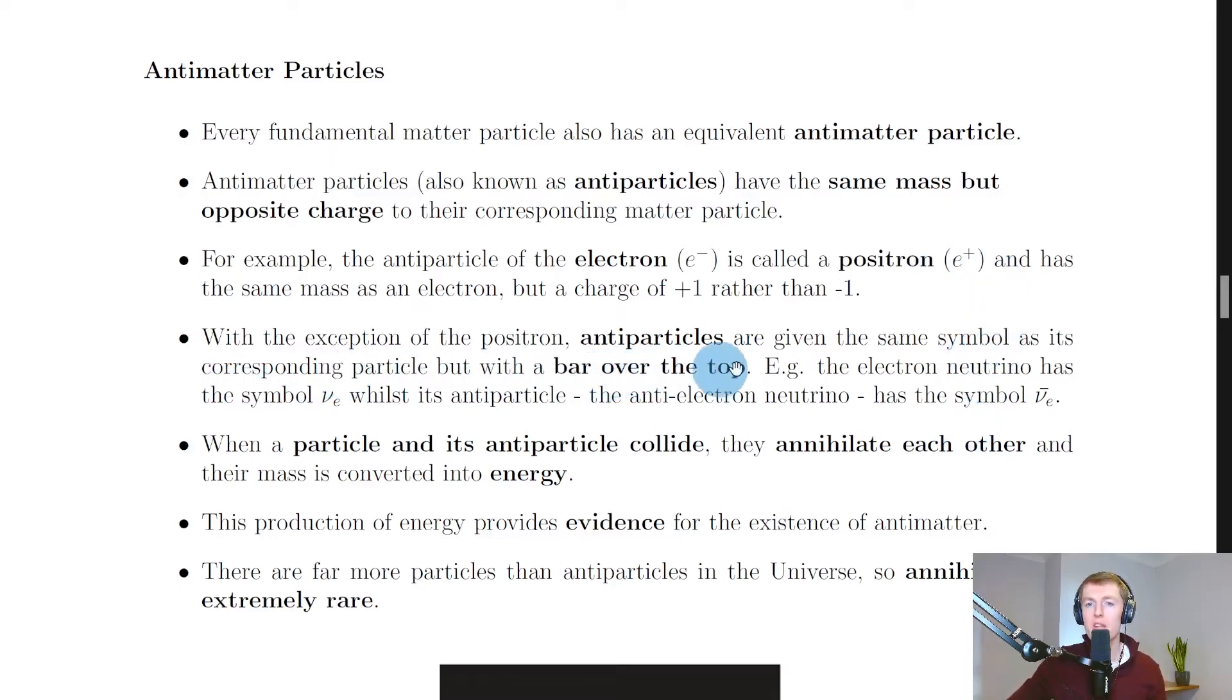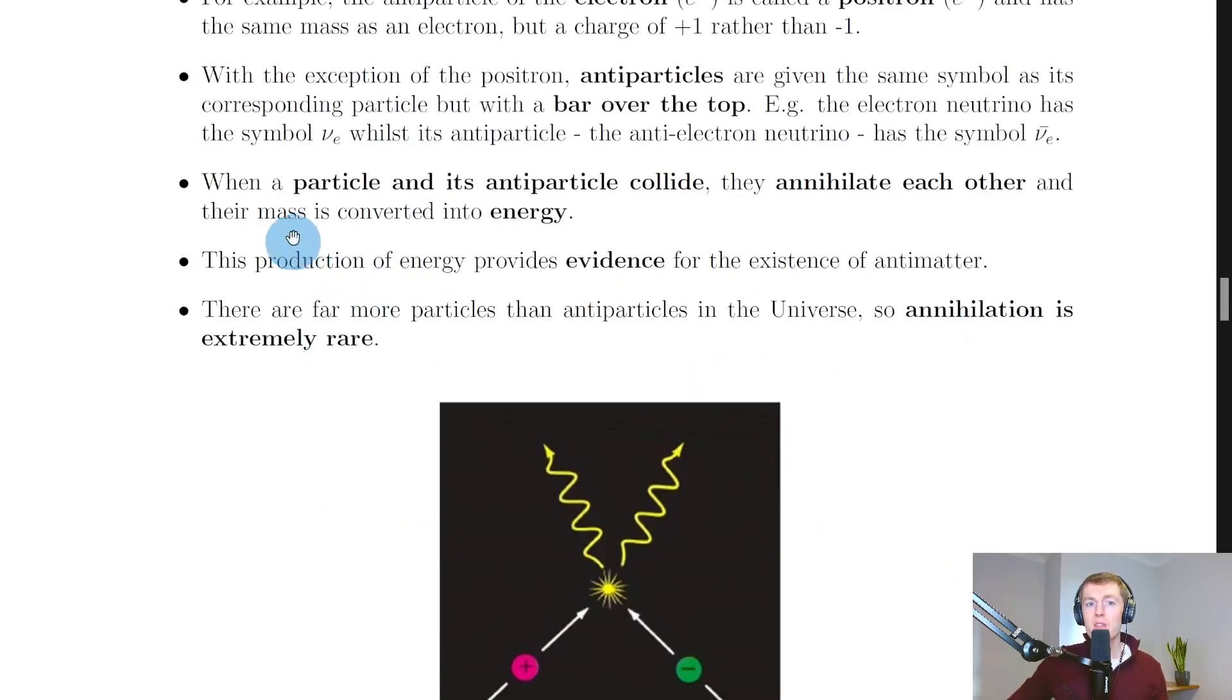It then says with the exception of the positron, antiparticles are given the same symbol as its corresponding particle but with a bar over the top. For example, the electron neutrino has the symbol nu e whilst its antiparticle, the anti-electron neutrino, has the symbol nu bar e, where e is used as the subscript and this Greek letter nu, which is spelled n-u, is sort of just like a curvy v. So whenever we want to write down a symbol for an antiparticle, we need to include a bar above the top of the symbol.